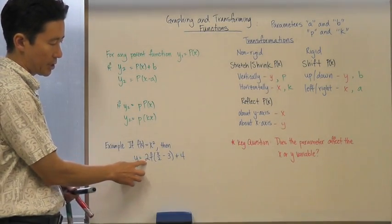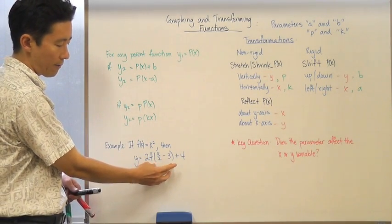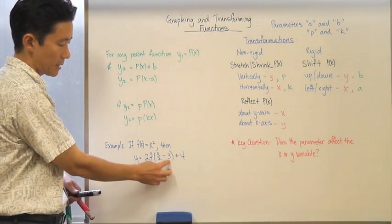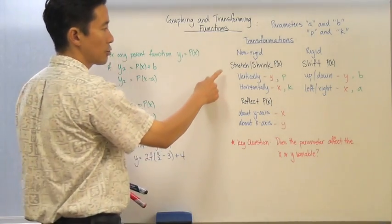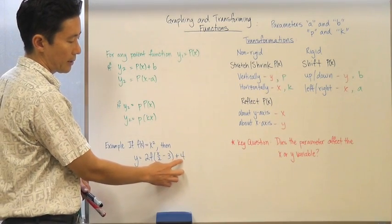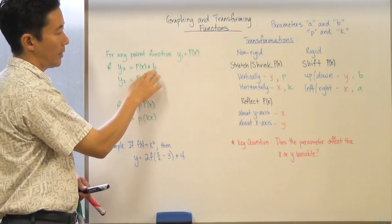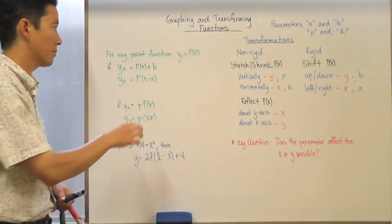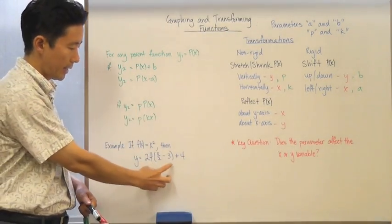Then we have the 2 out front. That 2 takes all of the y values now being generated from those horizontal transformations and multiplies them by 2, which means you're stretching vertically by a factor of 2. After that, we look at the plus 4 — that's the value of b. That value of b takes all of your y values and shifts them up 4 units, because that is how the 4 is affecting those particular y values.